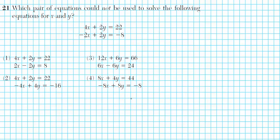Let's take a look at question number 21, which asks: which pair of equations could not be used to solve the following equations for x and y? The initial system is unsimplified, and all the options are also unsimplified systems of equations. Whichever option is exactly equal to the original in simplified form will yield the same solution. The goal is to reduce all the equations and see which one is different from the others, including the provided problem. We'll reduce by dividing by the GCF.